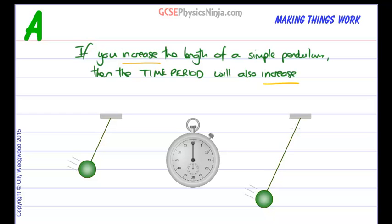If you quadruple the length of the pendulum, you'll actually find that the time period will only double. And so that's the relationship between the length of the pendulum and its time period.